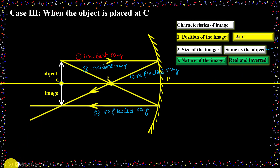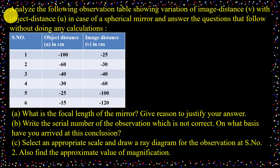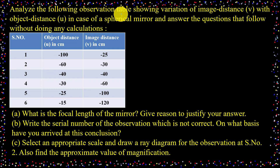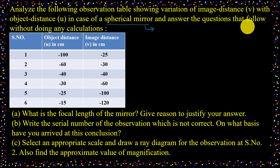Based on this case, what types of questions may you expect in board examinations? We will discuss that. The same question appeared in the CVC board exam 2024 — the only difference is that in the actual board exam it was about a lens, but we are discussing a mirror; the concept is the same. Now go through the question: 'Analyze the following observation table showing variation of image distance V with object distance in the case of a spherical mirror. Answer the questions that follow without doing any calculation.'